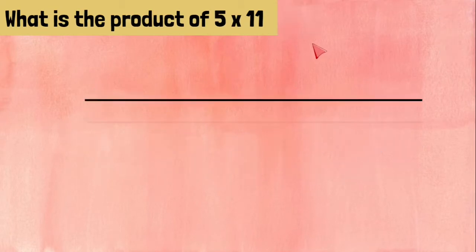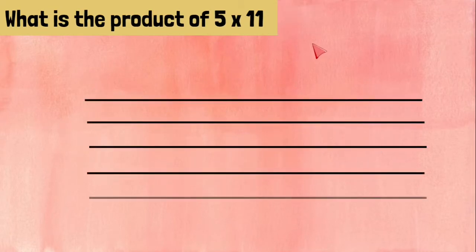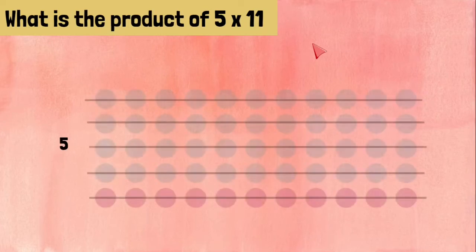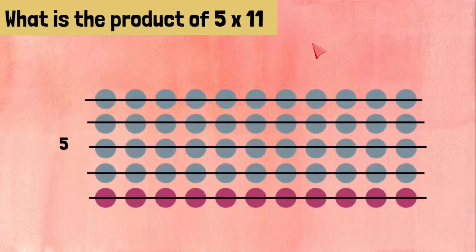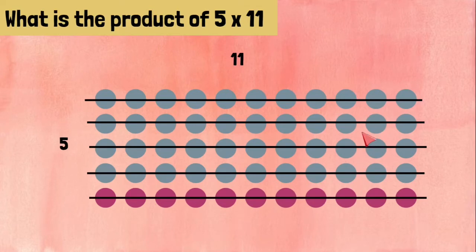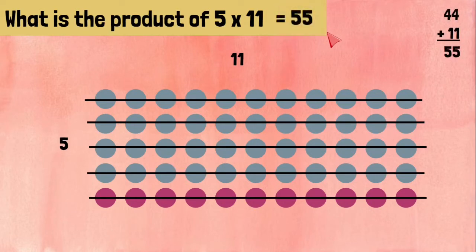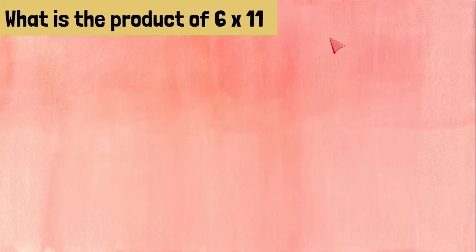5 times 11 means five rows with 11 counters on each of the five rows. Now we can take our 44 counters that we have in blue and add 11 purple ones, and we get 55. 5 times 11 equals 55.